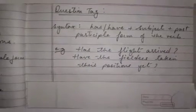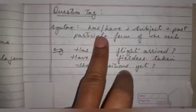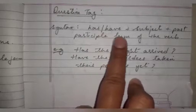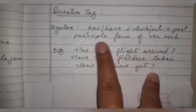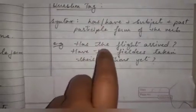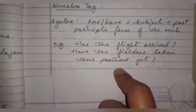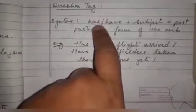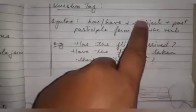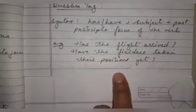Next we have the question form. To write Present Perfect Tense in question form, the syntax begins with 'has' or 'have' plus the subject plus the past participle form of the verb. Example: 'Has the flight arrived?' Another: 'Have the fielders taken their positions yet?' — have is the beginning, the fielders is the subject, taken is the past participle of take.